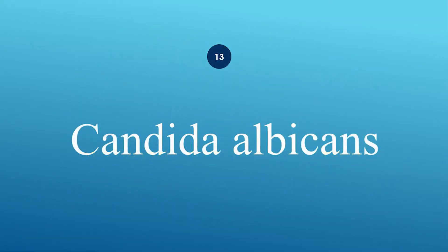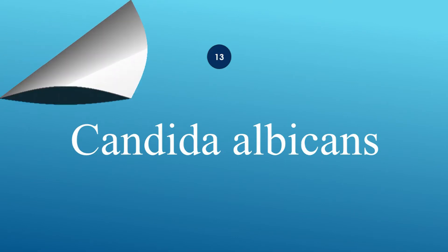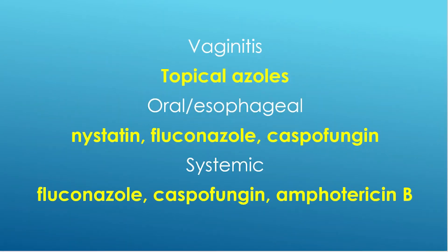What are the Candida albicans treatments? For vaginitis, use topical azoles. Treat oral and esophageal infections with nystatin, fluconazole, and caspofungin. For systemic infections, use fluconazole, caspofungin, and amphotericin B.